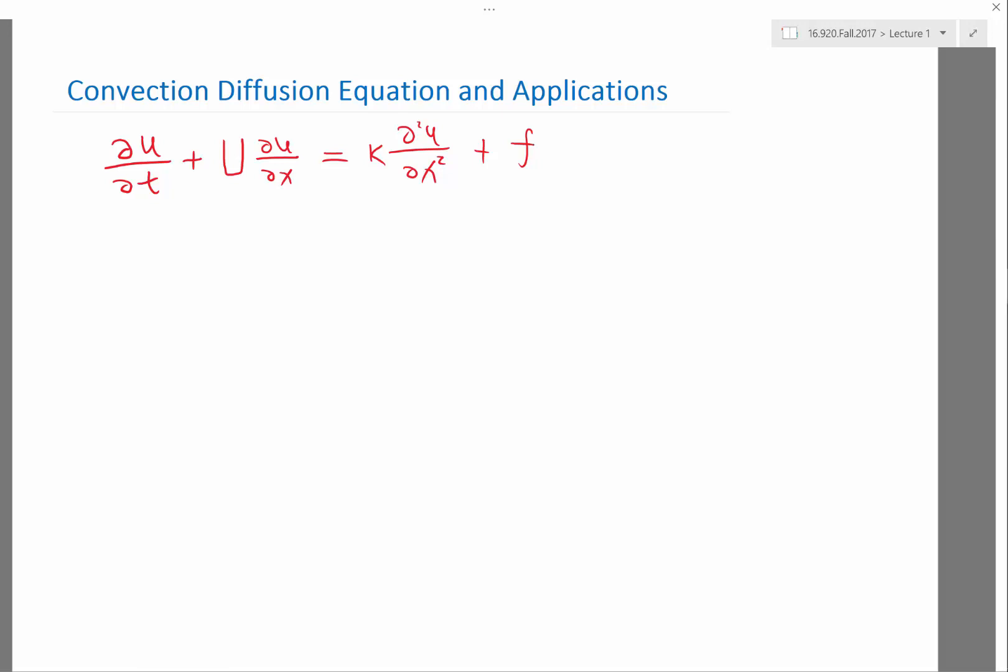First of all, we have partial differential equations, which means our solution u is a multivariate function. In this case, it's a function of x, the space, and t, the time. When we are taking partial derivatives, I hope everybody knows what partial derivatives mean - we are fixing one variable and taking derivative with respect to the other variable.